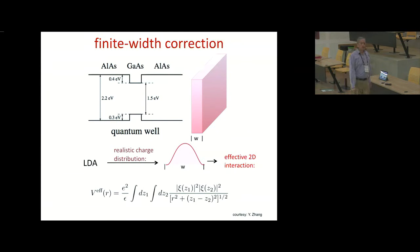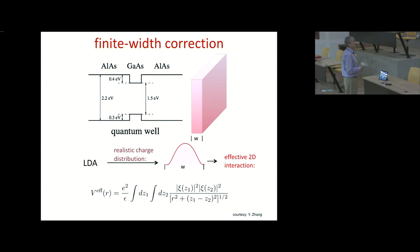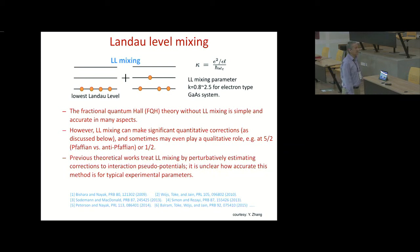We are now going to include quantum well width and Landau level mixing. For quantum well width, we calculate the transverse wave function in an LDA approach — essentially solving the Poisson and Schrödinger equations self-consistently. Once we know the shape of the wave function, we can write down an effective interaction that incorporates the effect of finite quantum well width. For Landau level mixing, we have to allow configurations involving higher Landau levels. Earlier works treated Landau level mixing in a perturbative fashion to linear order in kappa. The typical value of kappa experimentally is on the order of one to two, so it has not been clear how accurate the perturbative treatment is.